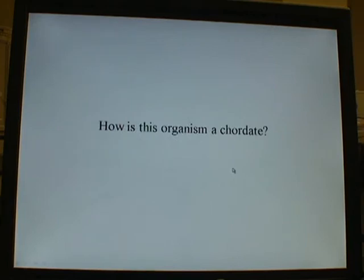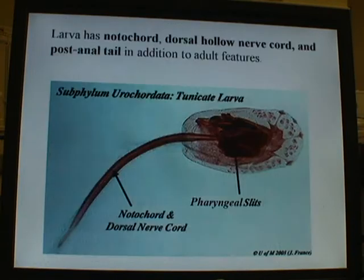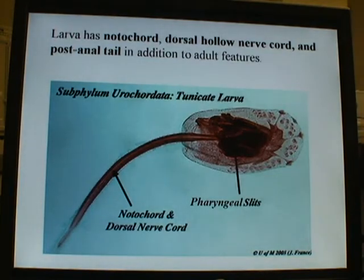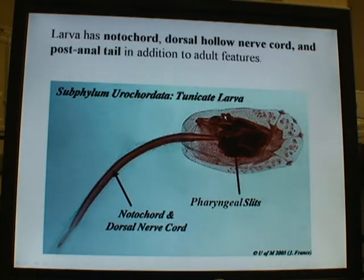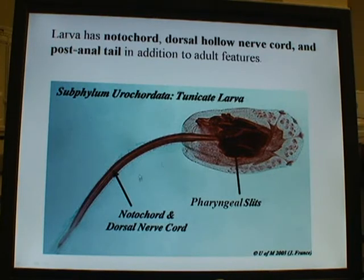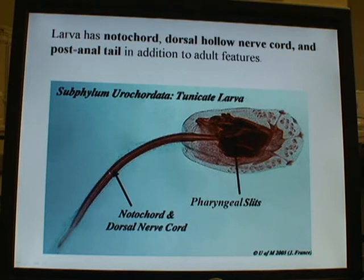But how is this organism a chordate? There are four characteristics that define chordates, and this organism only seems to have an endostyle — three other features appear to be missing. The answer is actually in its larval form. The larval form has all the parts of a chordate. This is what the larval form looks like — it's called a tadpole larva, or tunicate larva. It has a tail, and when born, it doesn't feed.